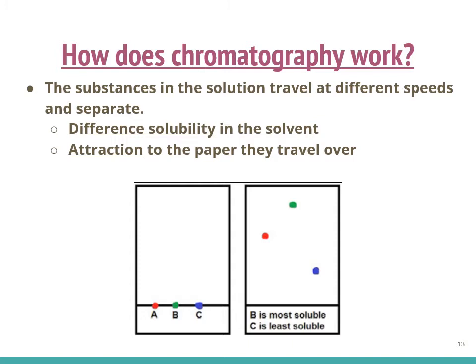For example, in this picture we have samples A, B, and C. Judging by the distance traveled by B, B is the most soluble in the solvent and the attraction onto the paper is weak, enabling B to travel further than samples A and C.